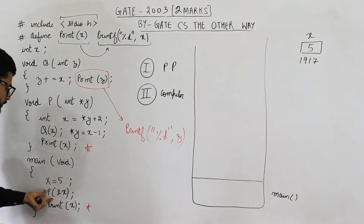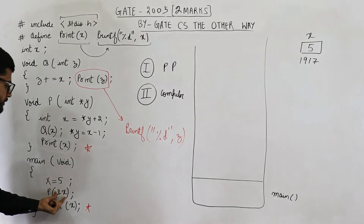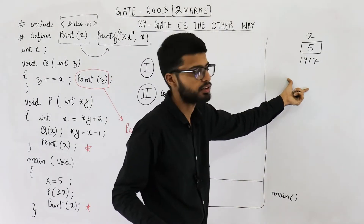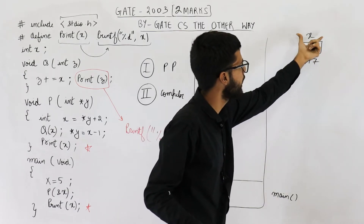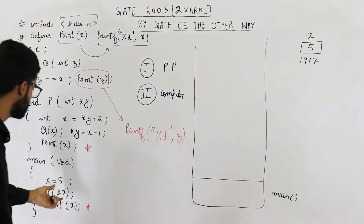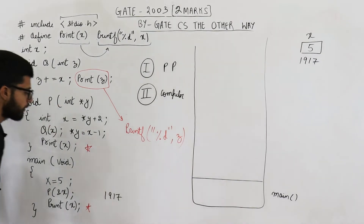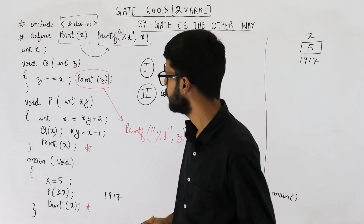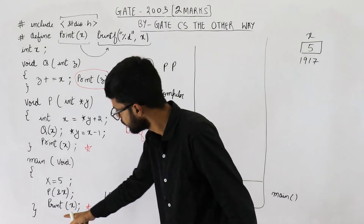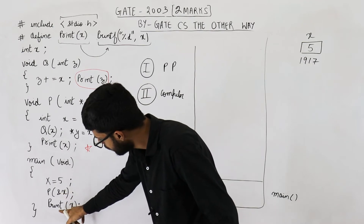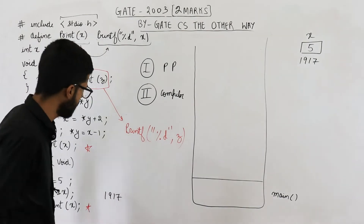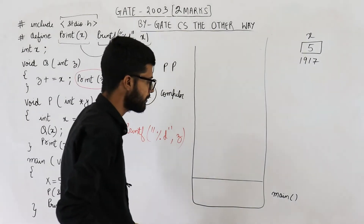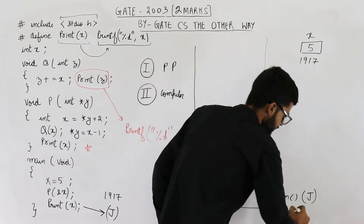In the next line, you are calling a function named P and passing the address of X. Again, X is not found locally, so we look in the data section and find X at address 1917. So you are calling function P and passing 1917. The control goes to function P, which will be completely executed. After executing function P, you come back and execute the last line. Let us label that last line as line number J — we have to resume execution from J.